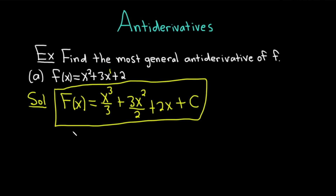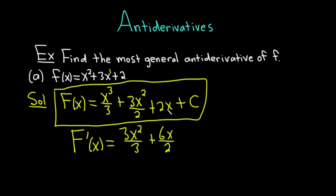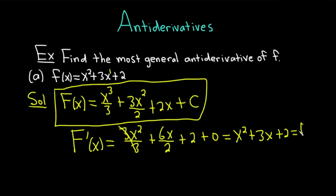You could check your answer. Taking big F prime of x: using the power rule, we get 3x squared over 3. The 3's cancel. Then 2 times x, and 6x over 2 gives 3x. The derivative of 2x is 2, and the derivative of C is 0. So we get x squared plus 3x plus 2 — that's equal to little f. So big F prime of x equals f of x for all x. That's what it means for big F to be an antiderivative of little f, and again, this process is called antidifferentiation.